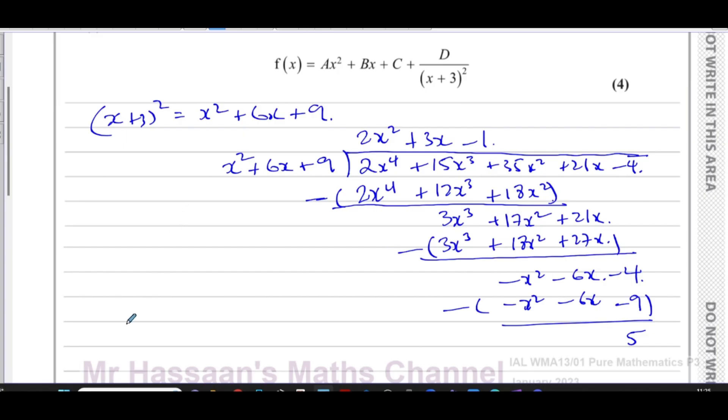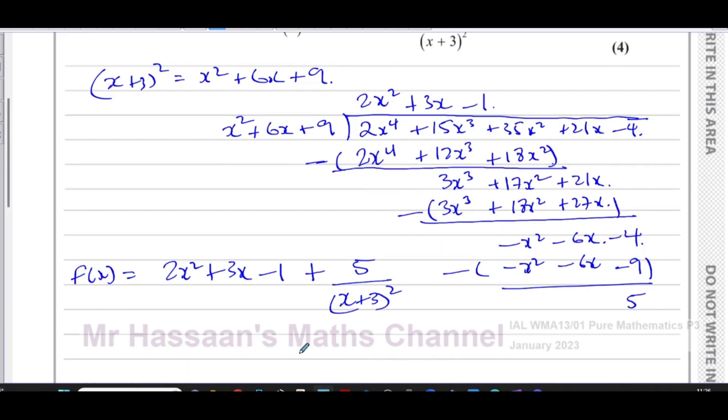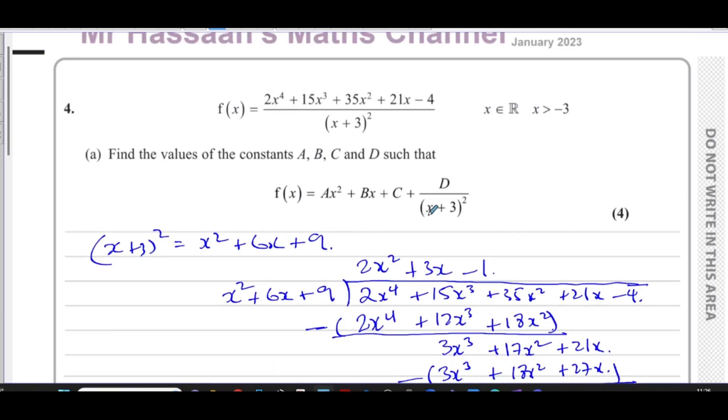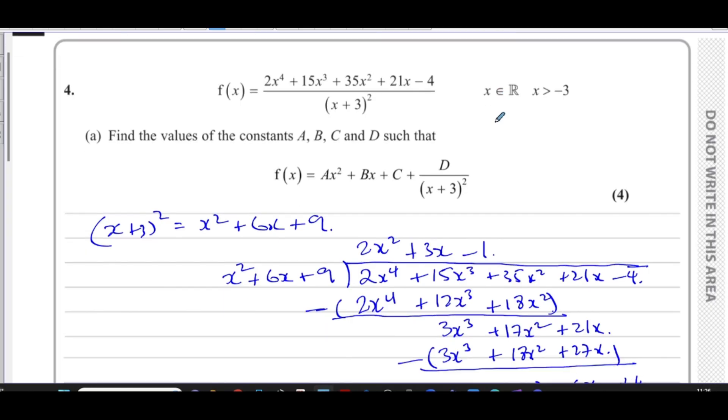So I can say that f(x) is equal to the quotient which is 2x squared plus 3x minus 1 plus the remainder which is 5 over x plus 3 squared. So we can see our values of A, B, C and D here very clearly. So A is 2, B is 3, C is minus 1, and D is 5. That's probably the simplest way to rewrite this as a mixed number by using algebraic long division. There are also other ways of doing it which involve identities and comparing coefficients.